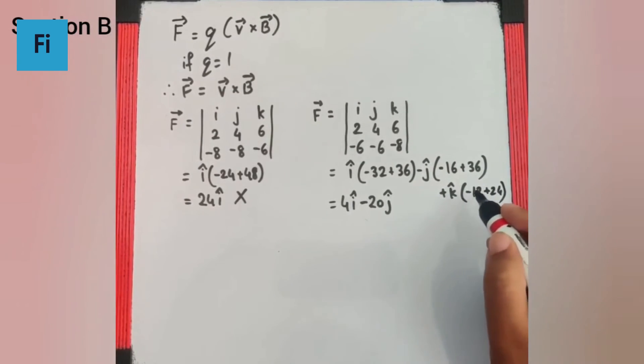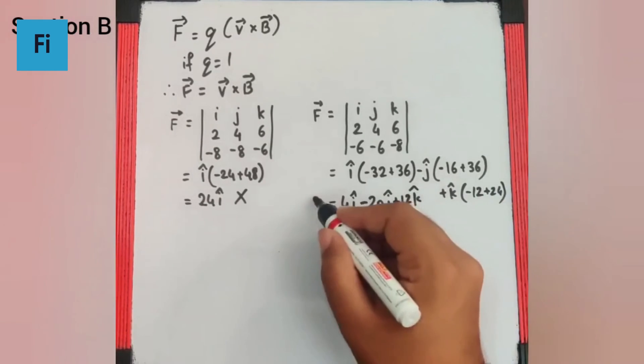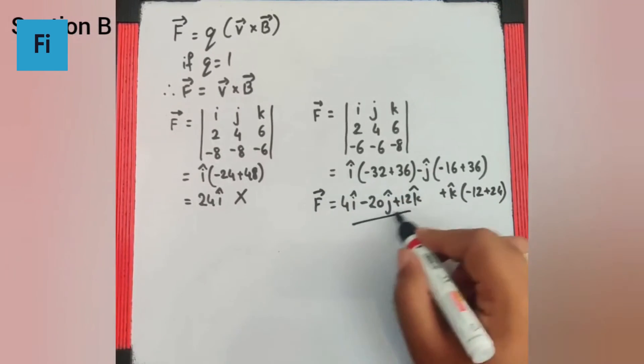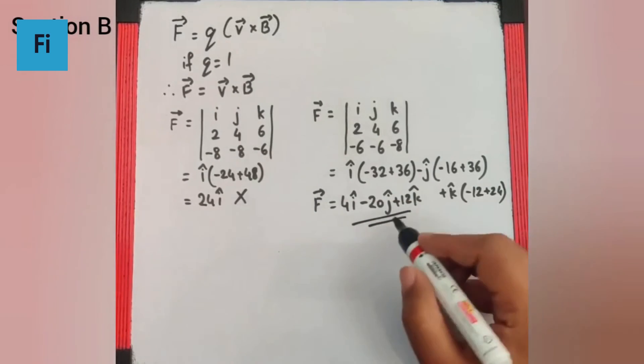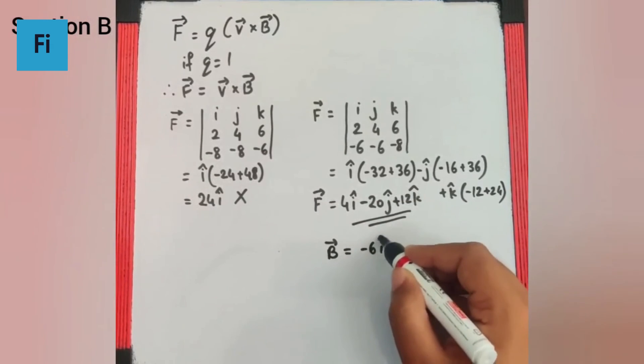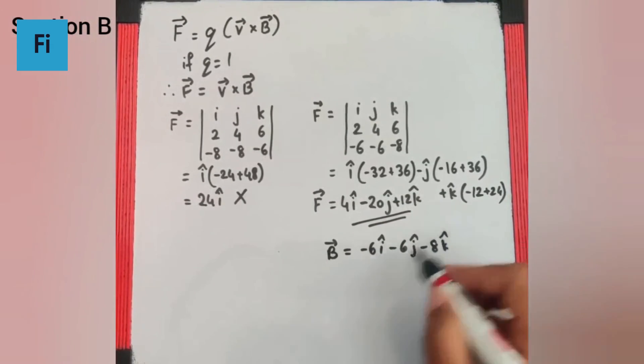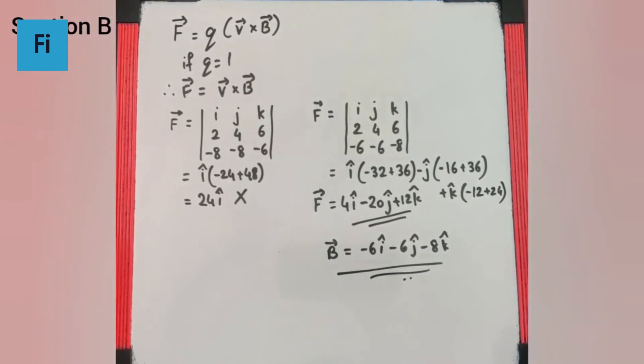So 24 minus 12 is going to be plus 12k cap, and that is exactly equal to the F bar given in the question. So this B bar has to be minus 6i cap minus 6j cap minus 8k cap, and that will be our final answer.